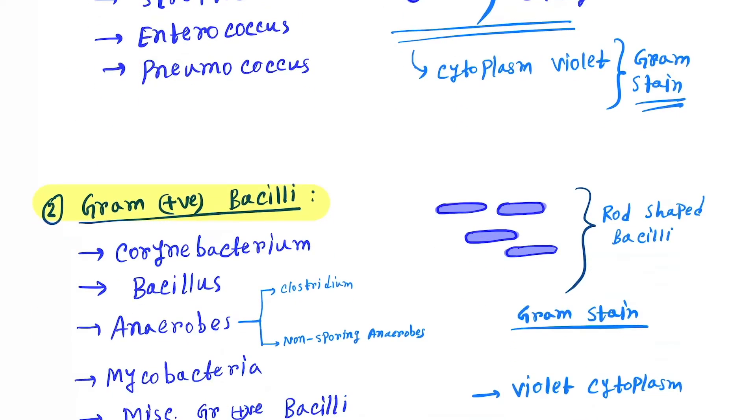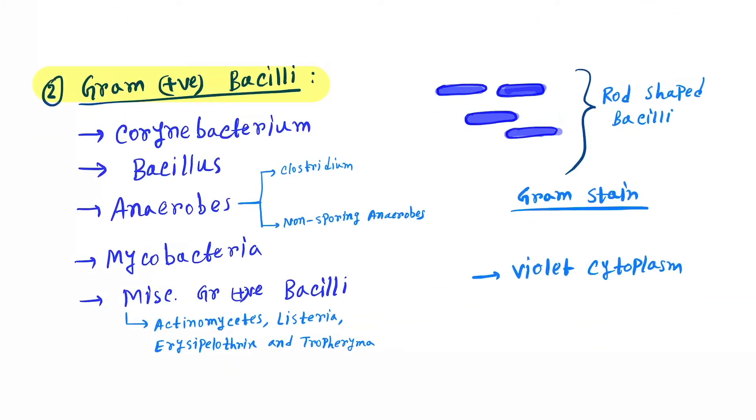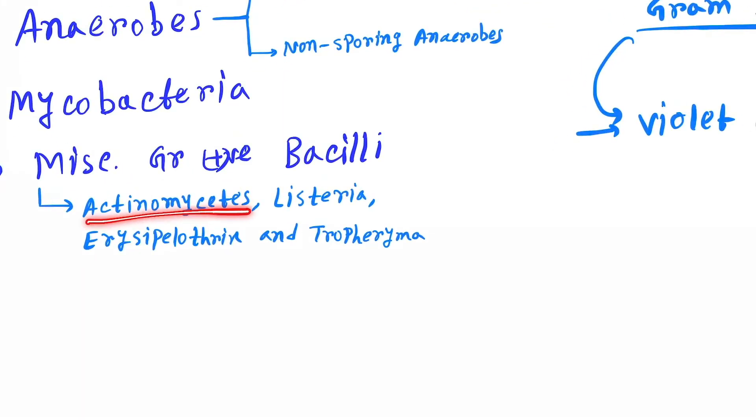Next is gram positive bacilli. Here the rod shaped bacteria will contain violet color cytoplasm in gram staining. The bacteria are Corynebacterium, Bacillus, anaerobes like Clostridium and non-sporic anaerobes, Mycobacterium, and miscellaneous gram positive bacilli like Actinomycetes, Listeria, Erysipelothrix, and Tropheryma.